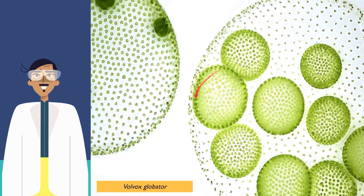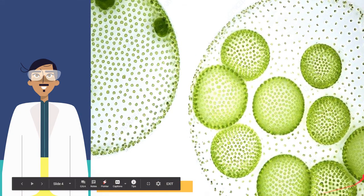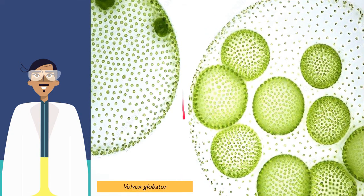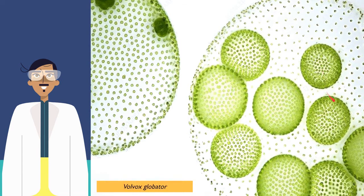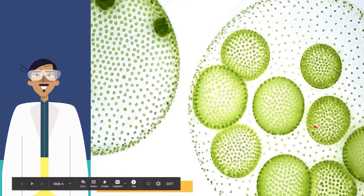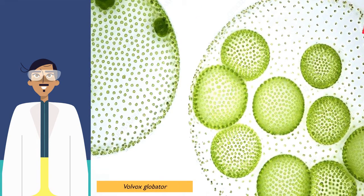This big colony is what we call the mother colony — this is the parent organism. When it reproduces, several daughter colonies will form inside of it. So you have 1, 2, 3, 4, 5, 6, 7, 8, 9 daughter colonies inside one mother colony.